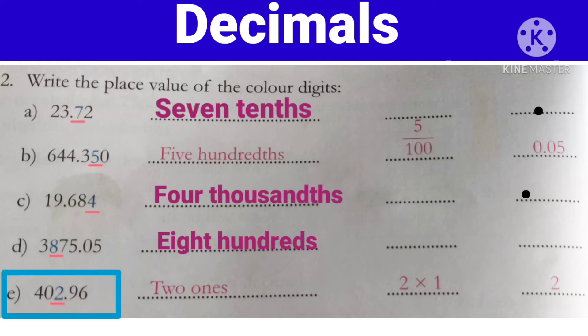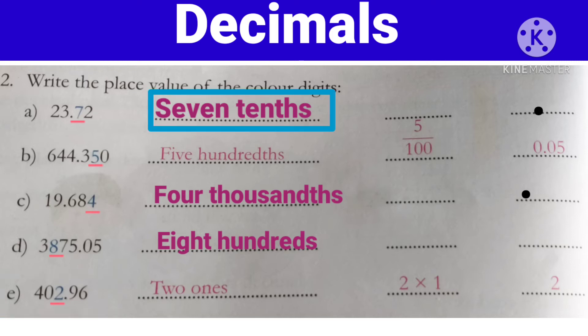Now next one — e) 402.96. Yahaan par 2 underline karawa hai. Toh ye 2 bhi jo hai, woh whole part mein se hai. Toh 2 ki place kya hogi? Yes, very good — ones place pe hai 2. So, 2 ones. Yahaan dekhiye: 7 tenth — yani ye fractional part ka hai, toh hum 7 tenth place pe hai. Toh hum iska fraction form likhenge: 7 by 10.